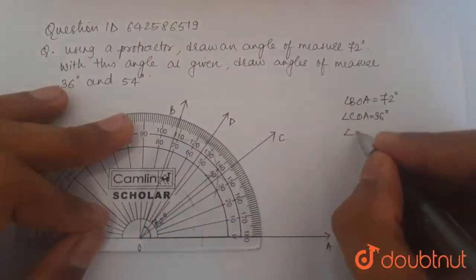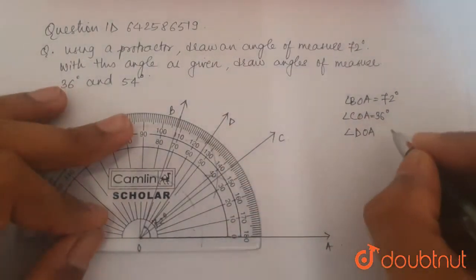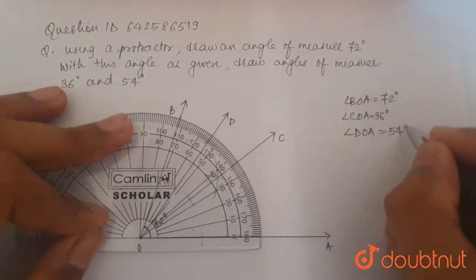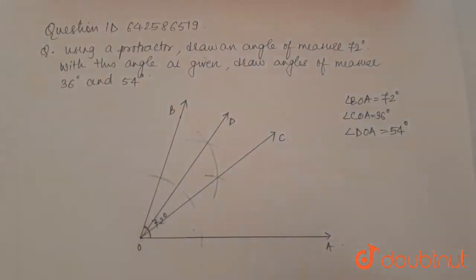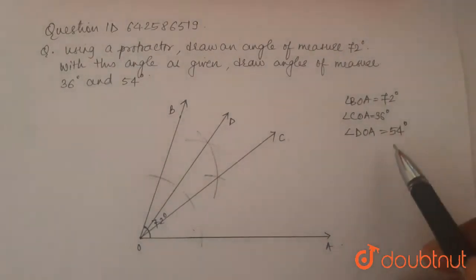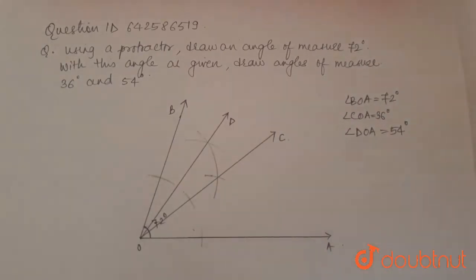So we have angle DOA equal to 54 degrees. Hence we have made two angles, angle COA and angle DOA of 36 degrees and 54 degrees respectively with respect to our given angle BOA which was 72 degrees. Thank you.